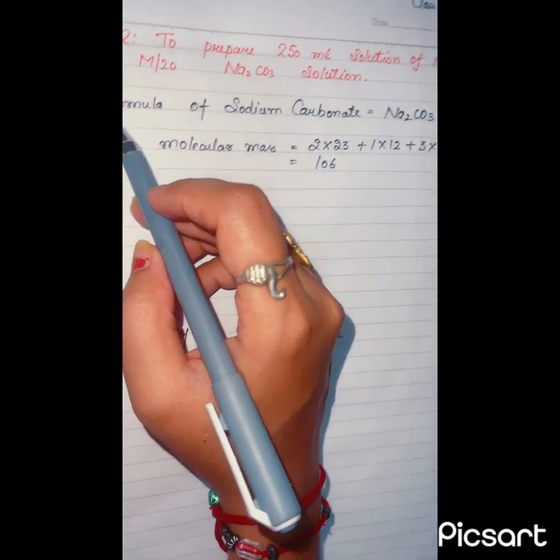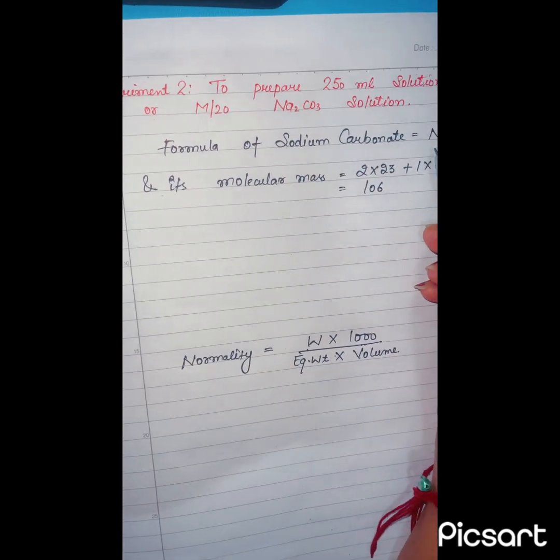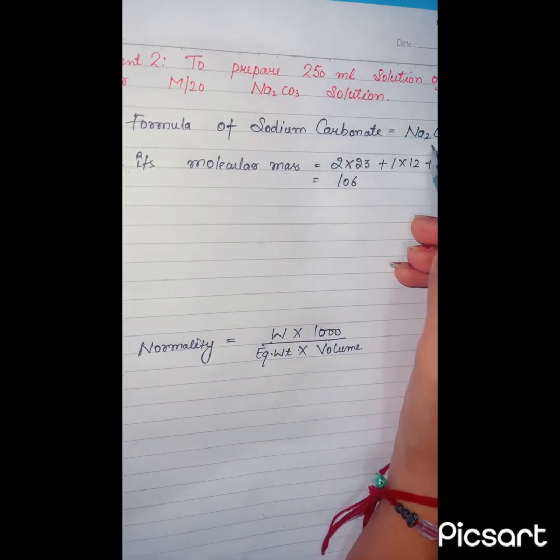For performing this experiment, we have to know about the formula of sodium carbonate, that is Na2CO3, and its molecular mass is 106.